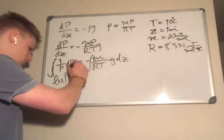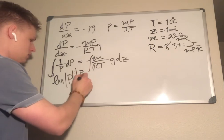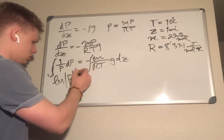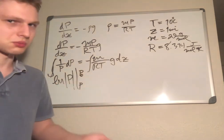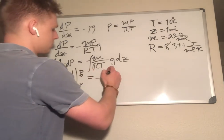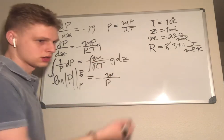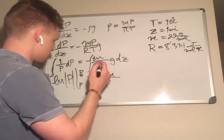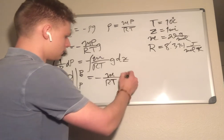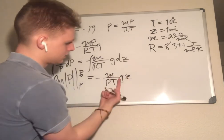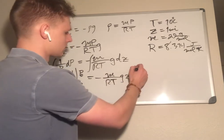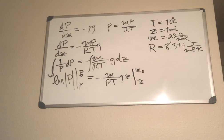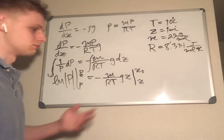Now I'm going to integrate this. The integral of dp over p from p0 to p, we're going to do final minus initial. This is the integral of negative m over rt g dz from z0 to z.